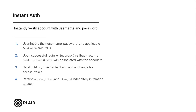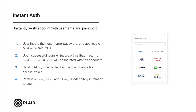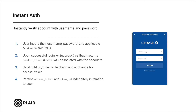Instant auth allows users to instantly verify accounts at their financial institution by inputting their online banking username and password. Plaid mimics what a user would see in their online banking portal, so we surface any multi-factor authentication or recaptchas to the user as they're authenticating. When the user successfully inputs their credentials, the on-success callback within PlaidLink will return a public token, in addition to metadata associated with their accounts.